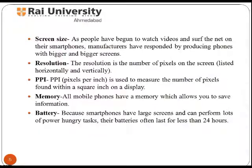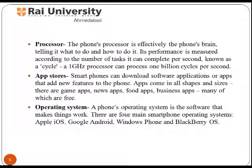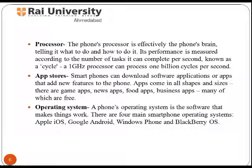Memory of a mobile phone allows you to save information so you can maintain a good database anywhere and anytime. The phone processor, best known as the phone's brain, tells it what to do and how to do it. Its performance is measured according to the number of tasks it can complete per second.